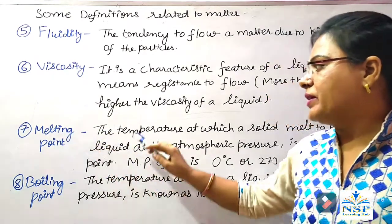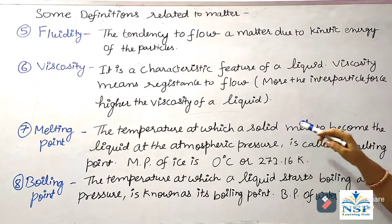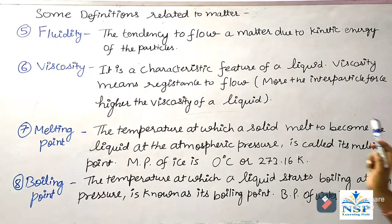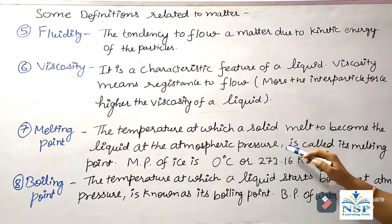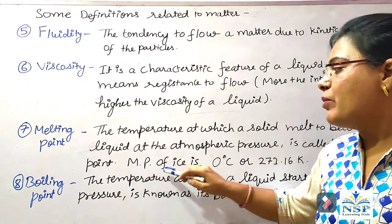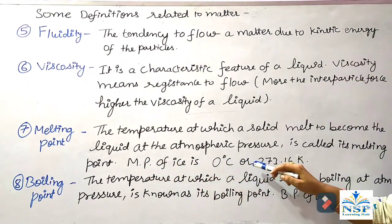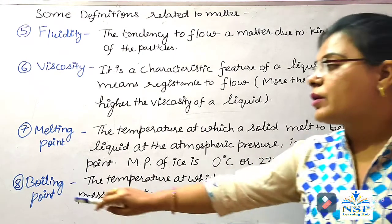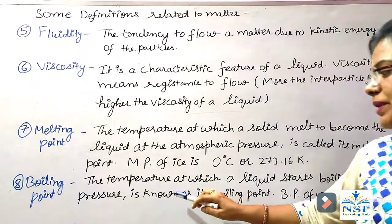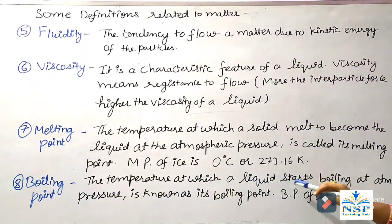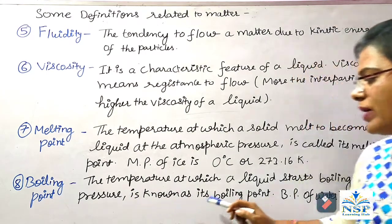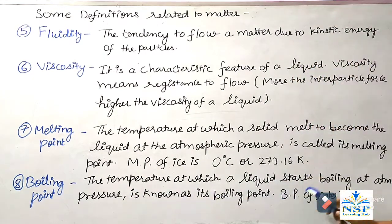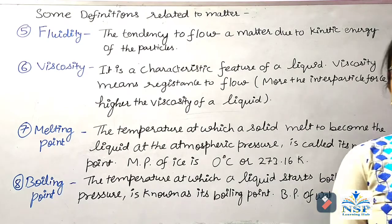Number 7, Melting Point. The temperature at which a solid melts to become liquid at atmospheric pressure is called the melting point. Melting point of ice is 0 degree centigrade or 273.16 Kelvin. Boiling point is the temperature at which a liquid starts boiling at atmospheric pressure. Boiling point of water is 100 degree centigrade.